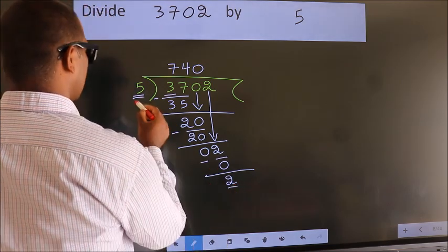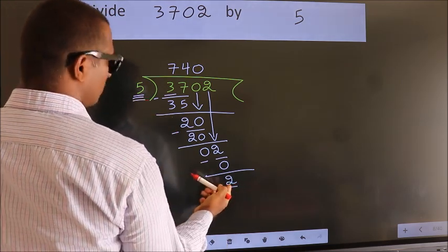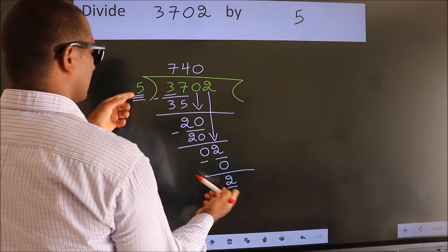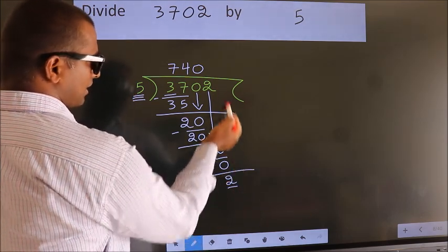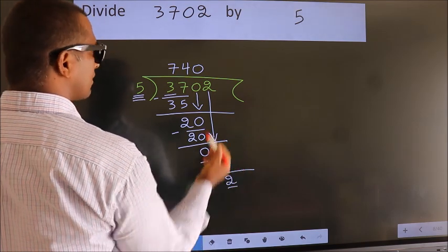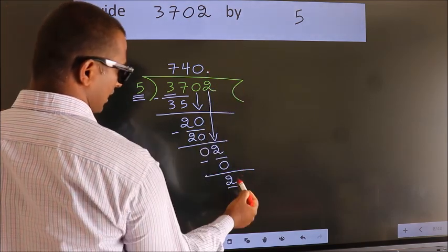Here we have 2, here 5. 2 is smaller than 5. And we did not bring any number down. So now we can put dot, take 0.